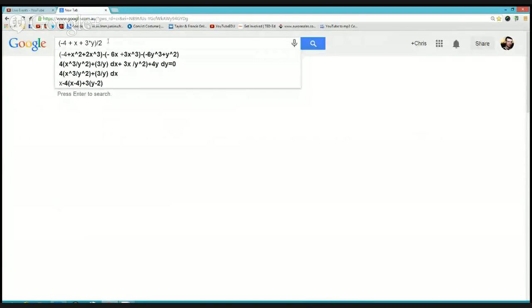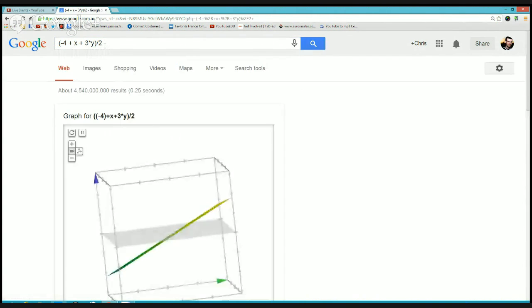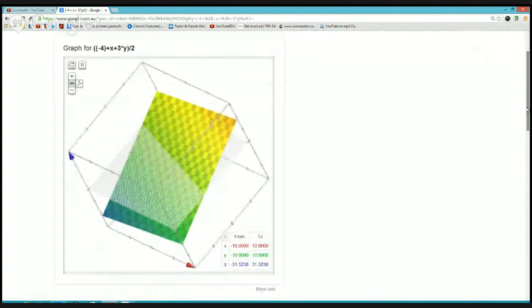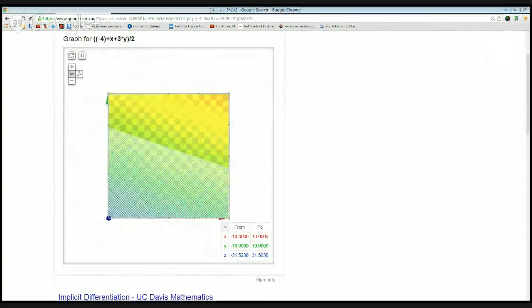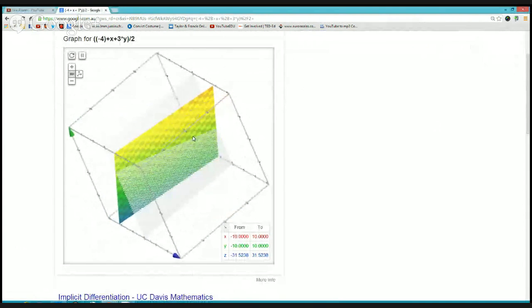Alright, so now Google has graphics plotting capabilities now. So what I have done here is I have actually taken the equation of the plane that I was given and made z the subject. So if I make z the subject and just rearrange everything, I get z equals negative 4 plus x plus 3 times y all over 2. So what happens if I type that into a search? Well, you will see down here, here is a graph for that plane.